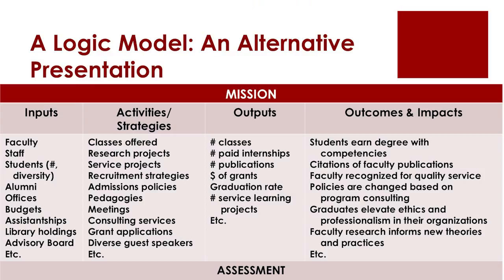This is not the only way to present a logic model. Here's an alternative format using traditional rows and columns. Across the top you can see the mission — instead of placing it at the center, it's placed at the top. Both portrayals have meaning and significance. Then you have a series of columns: inputs, activities and strategies, outputs, and outcomes or impacts. These are similar to those circles on the previous graphic, but here you also have the benefit of examples in each of those categories.